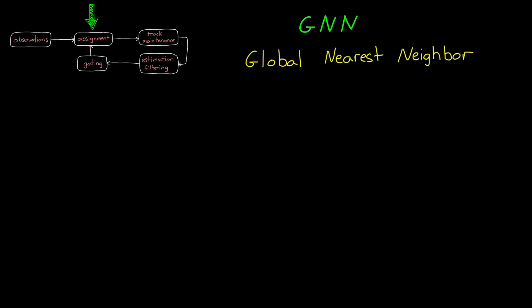And possibly the simplest assignment algorithm to think about is the GNN, the global nearest neighbor. This simply assigns a track to the nearest observation. But the interesting thing here is that it's not necessarily the nearest Euclidean or geometric distance, but the nearest probabilistic distance like you get with the Mahalanobis distance.